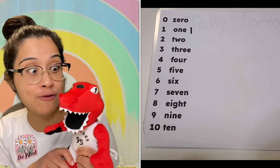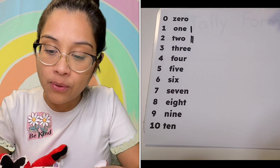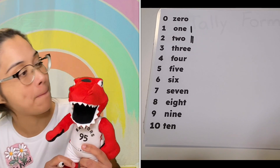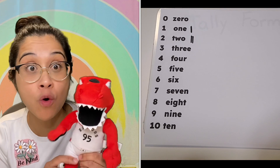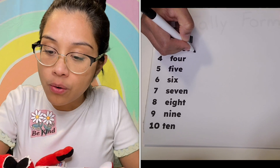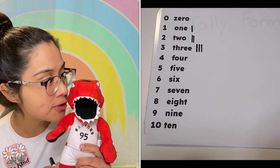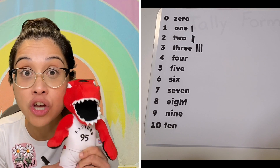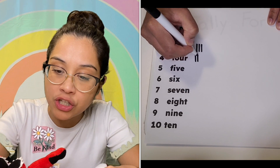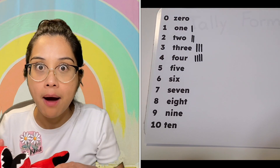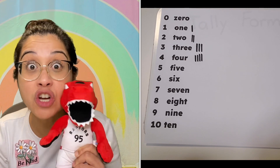'Hey Mr. Dinosaur, have you any wood? Yes I do — I have two pieces of wood!' The tally for two: one, two. Day three: 'Have you any wood? Yes — I have three pieces of wood!' Three straight lines: one, two, three. Day four: 'Have you any wood? Yes — I have four pieces of wood!' Count with me: one, two, three, four.